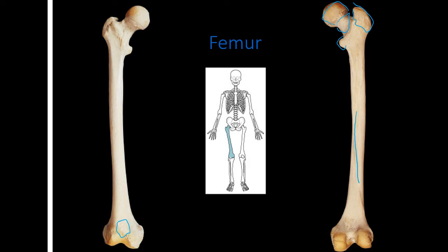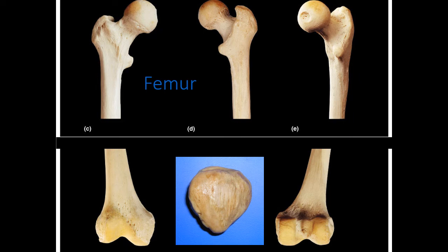At the distal end on the anterior side, we have the patellar surface — a roughened area — and the adductor tubercle. There are also a medial condyle and a lateral condyle. In a close-up view of the femoral head, there is a small depression called the fovea capitis. The patella sits on that patellar surface, with the apex at the bottom and the base at the top.